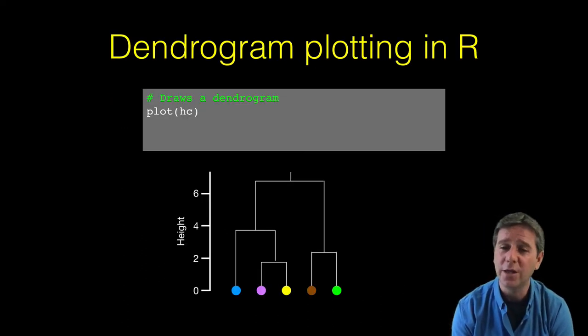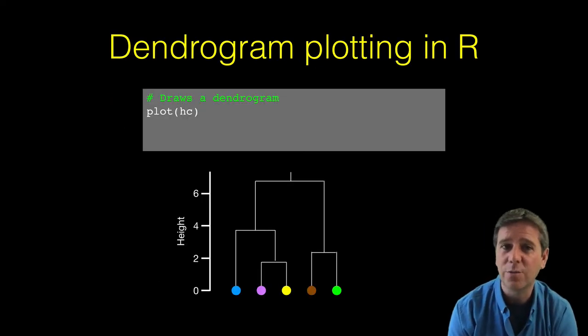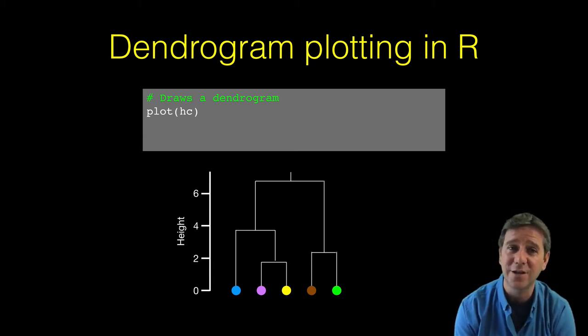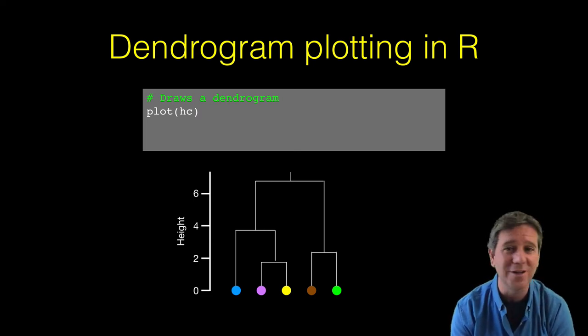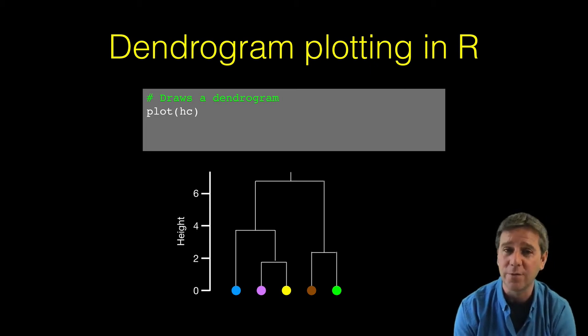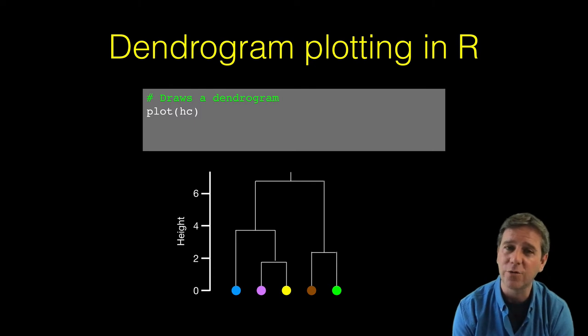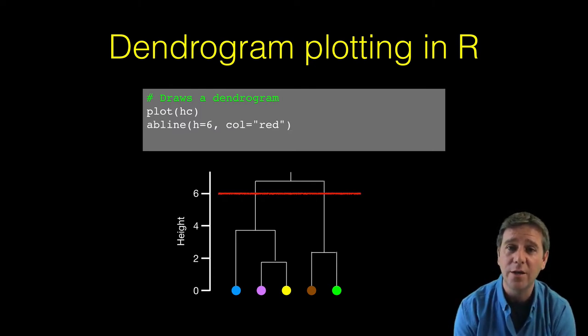We can draw these in R by calling the base R plot function. Because the result of hclust has a class, plot has a method that knows to plot it as a tree, not as a scatter plot or bar plot. We just call plot on hc, our resulting object from running hclust on our distance matrix, and it'll make the tree.